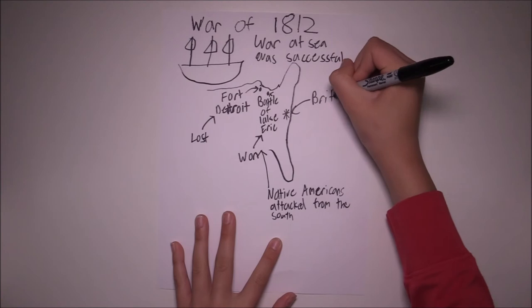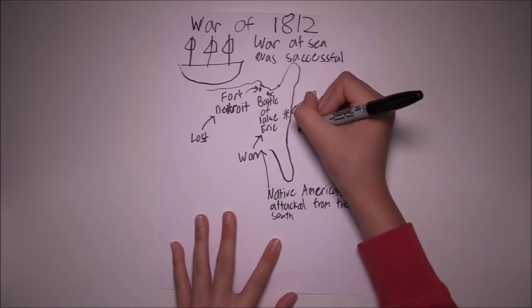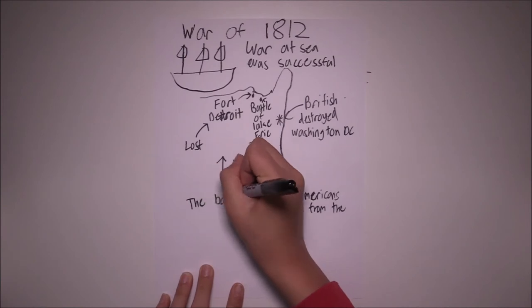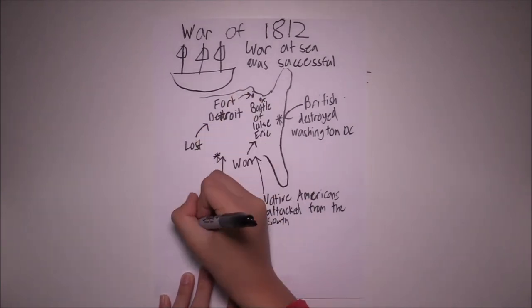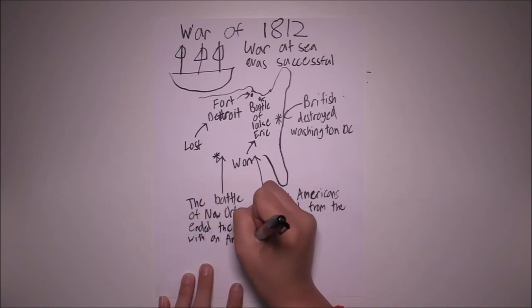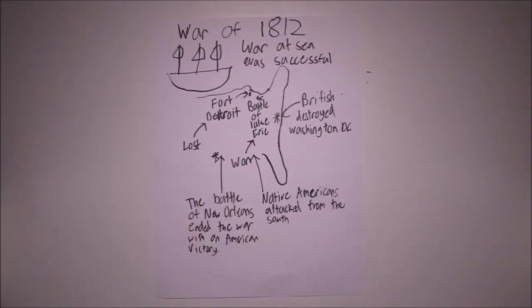Back east, Britain attacked overland, destroying Washington D.C. After the attack on Washington, British moved south to New Orleans. However, in the Battle of New Orleans, Andrew Jackson's army destroyed the British.